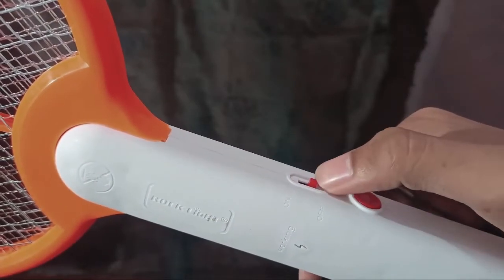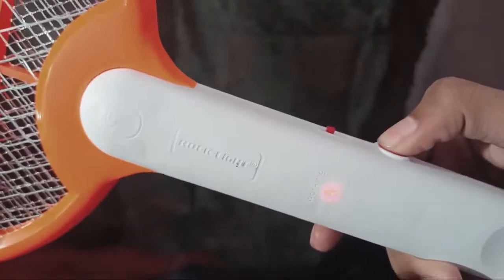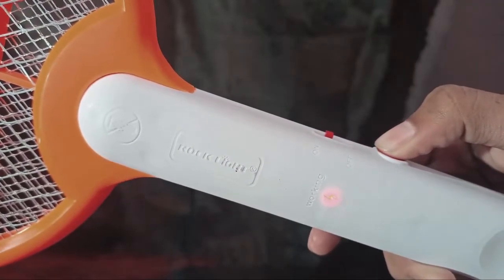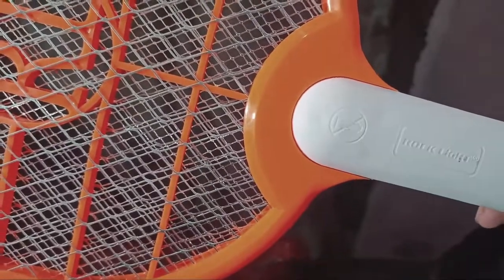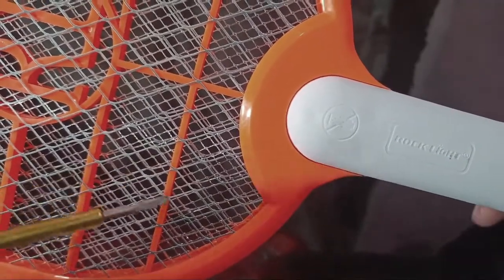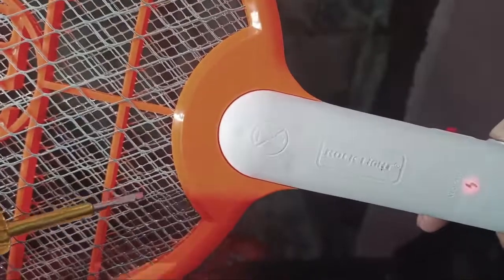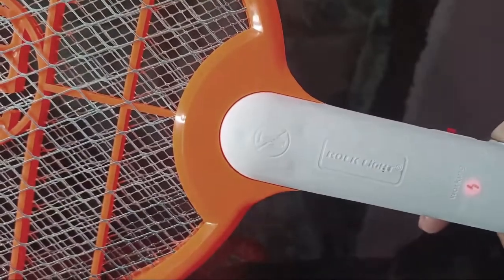But before moving on to that, let's check its external features. You can see there is a charging pin with a switch and a battery inside, and there is an LED which glows when charging. Here you can see there is an on/off switch.